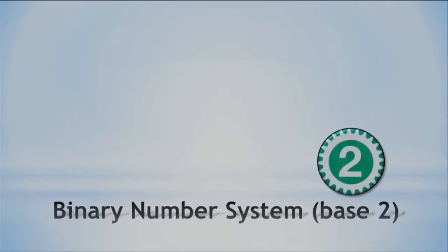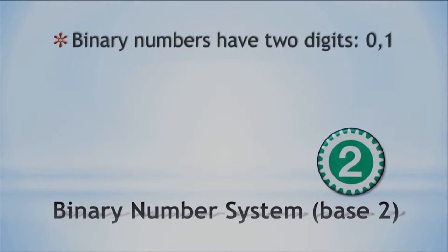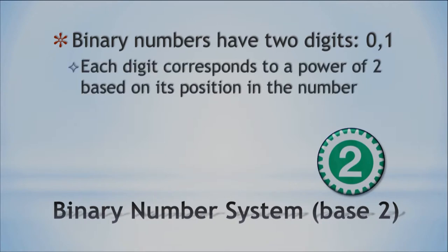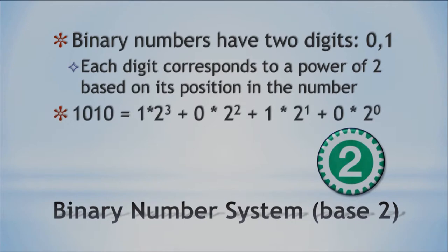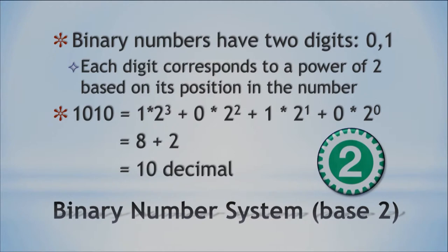We'll see how we do the same thing for the binary numbering system. We use base 2 instead of base 10. Binary numbers have two digits — 0 and 1 — and each position corresponds to a power of 2. So 1010 in binary works out to: 1 times 2 to the third (which is 8), plus 0 times 2 squared, plus 1 times 2 to the first (which is 2), plus 0 times 2 to the zeroth. So 1010 in binary equals 10 in decimal.